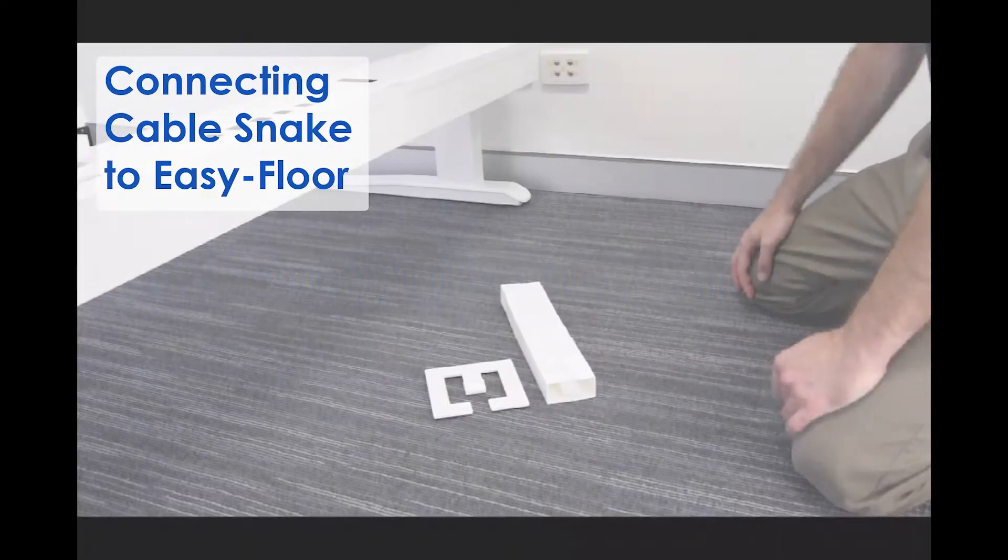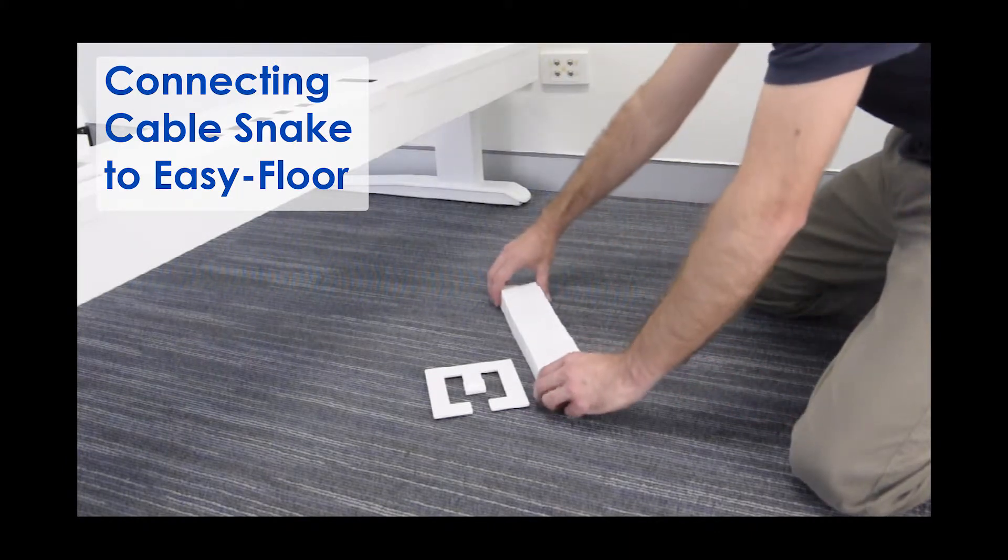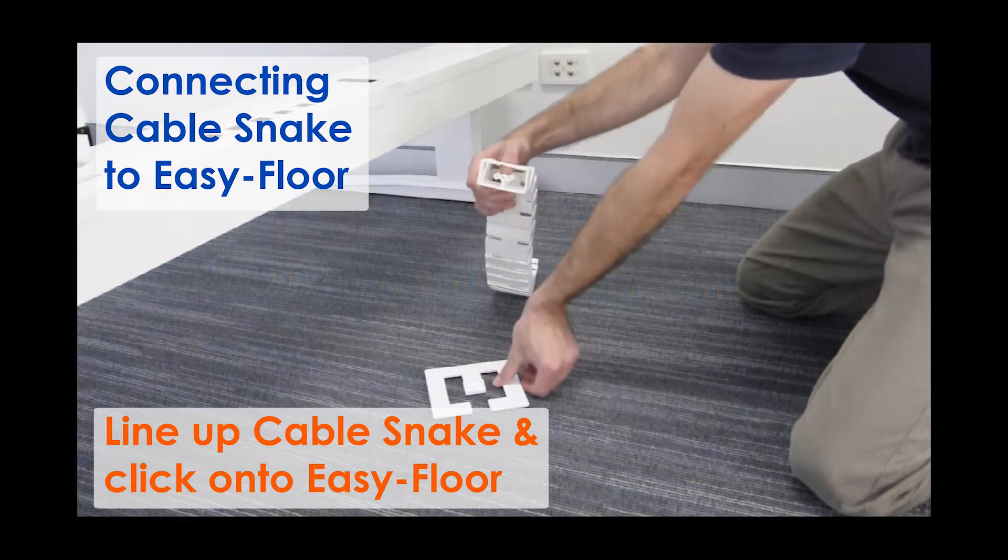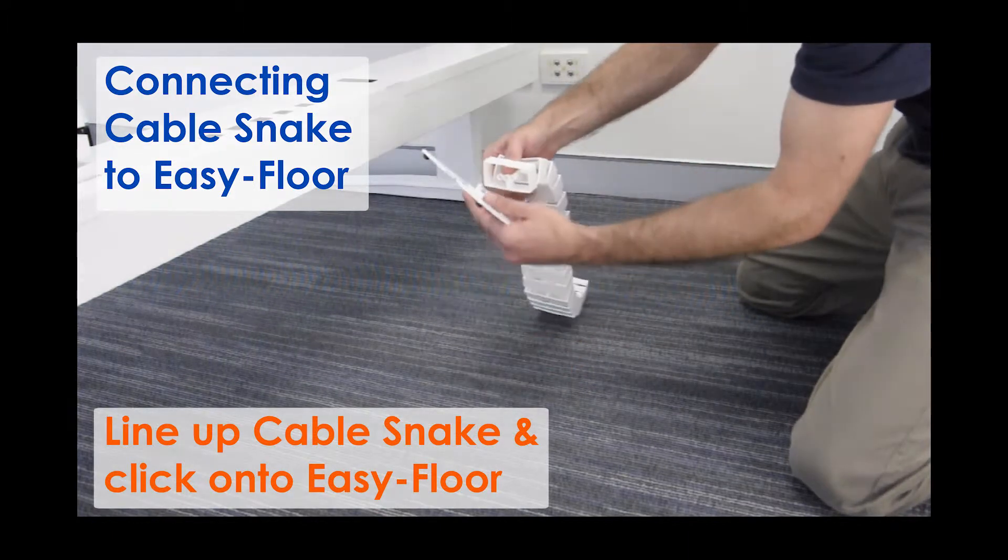Installation begins with connecting the Cablesnake to the EasyFloor. For connection, line up the Cablesnake and click onto the EasyFloor.